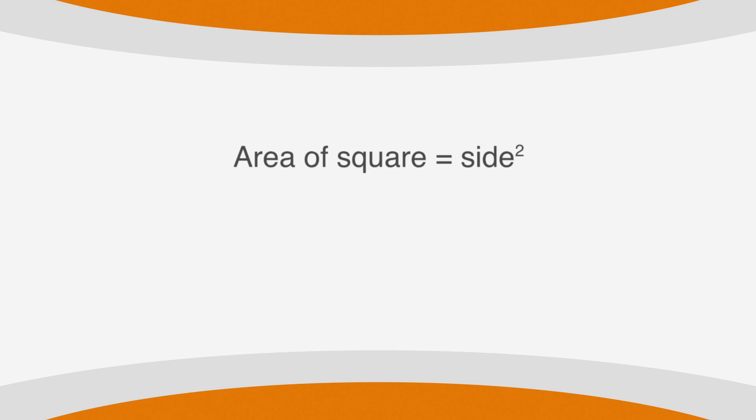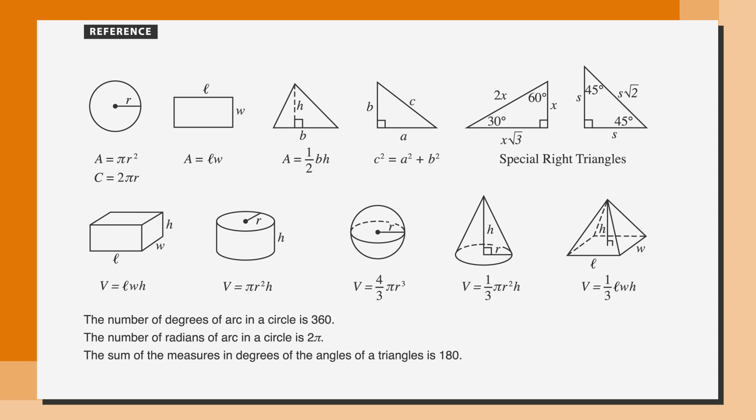The formula for the area of a square is side squared. The formula for the area of a rectangle is length times width. If you ever forget these formulas, they're included in the formula box on the SAT.